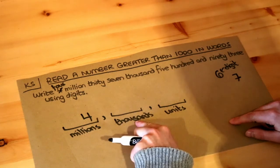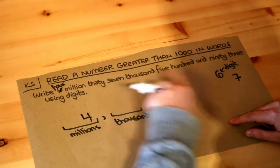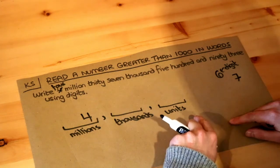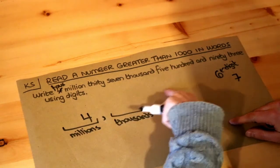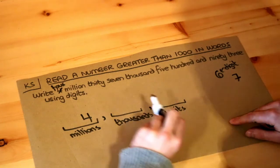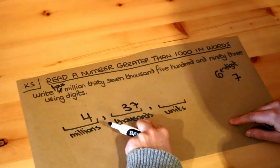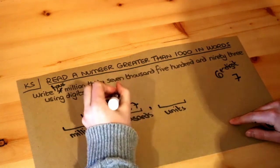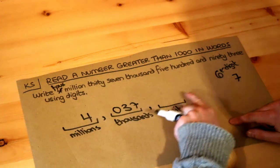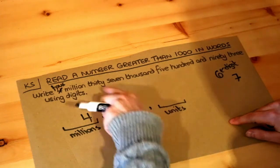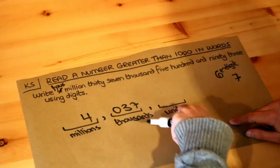How many thousands do we have? We've got four million thirty-seven thousand. Just to note that, other than at the start, we have to have three digits in each section. So we've got thirty-seven thousand — we put the thirty-seven here but we need to put a zero on the front, giving us 037.